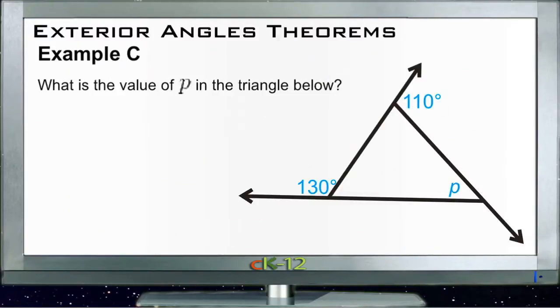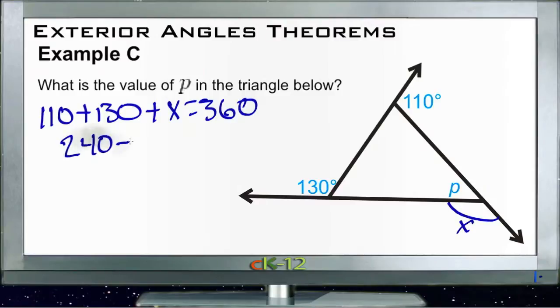Okay, let's take a look at example C. Example C says what is the value of p in the triangle given. So we know that the exterior angles of a triangle all total 360 degrees. So we know that 110 plus 130 plus x equals 360. This is 240 plus x equals 360. Subtract 240 from both sides, and x equals 120.